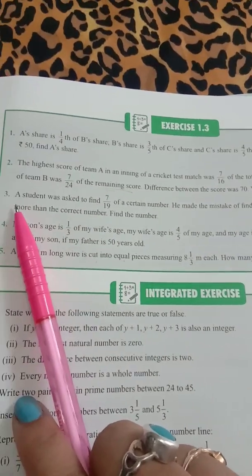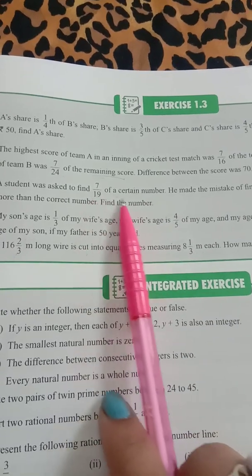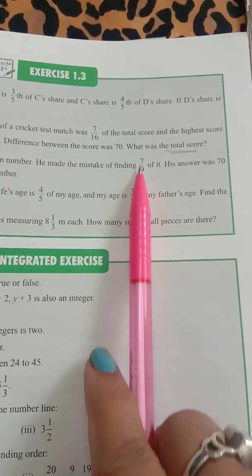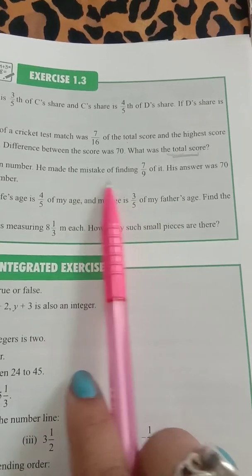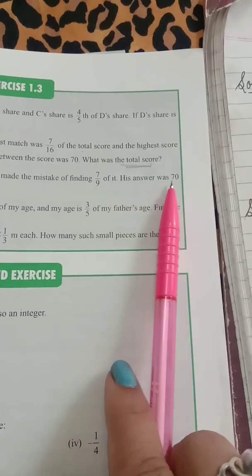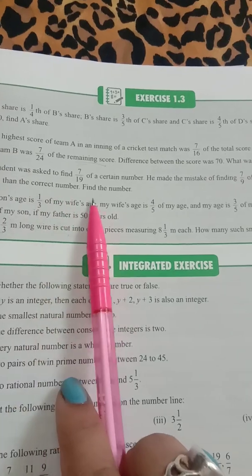Question number 3. A student was asked to find 7 by 19 of a certain number, that means this is the correct number that he was asked to find out. He made a mistake and calculated 7 by 9 of it. So he found a wrong number, which was 7 by 9 of the given number. His answer was 70 more than the correct. So wrong answer was 70 more than the correct answer. You have to find the number.